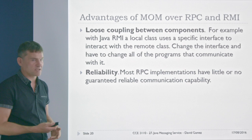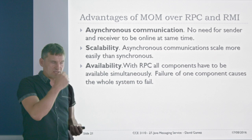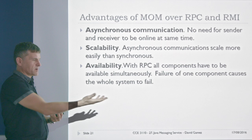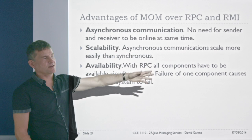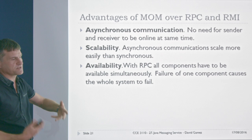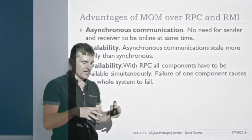Most remote procedure call implementations have little or no guaranteed reliability, whereas with message-oriented middleware you can have persistent storage of message queues and can guarantee message delivery. Asynchronous communication is a big advantage — the sender and receiver don't need to be online at the same time. With RMI, if the remote computer is down, you're stuck. With messaging, you just send off the message regardless of whether the other person is online.